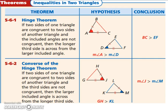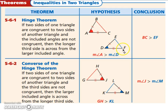Let's look at inequalities in two triangles: the hinge theorem. If two sides of one triangle are congruent to two sides of another triangle and the included angles are not congruent, then the longer third side is across from the larger included angle. So if angle A is larger than angle D, then the distance BC is going to be larger than the distance EF.